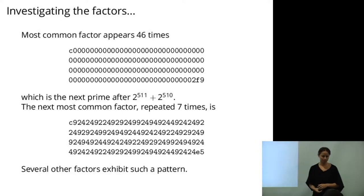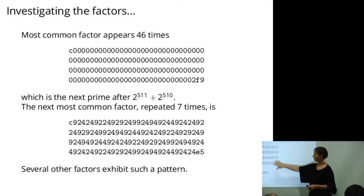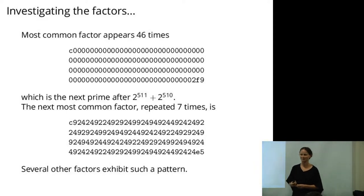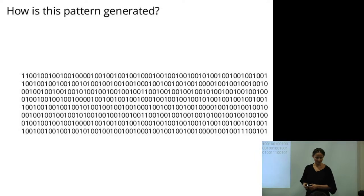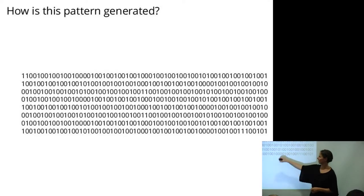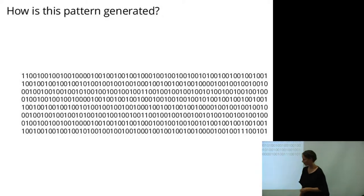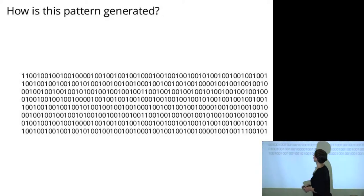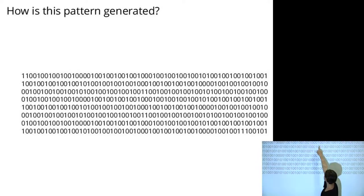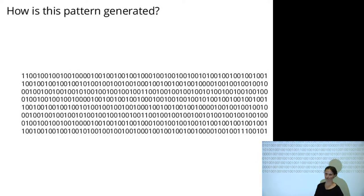The next most repeated common factor was also pretty non-random looking. Many of the other most repeated factors showed similar patterns. Looking at the bit pattern in hex, it looks sort of periodic but not entirely periodic — you have sequences of zeros, but not even the same number of zeros each time.